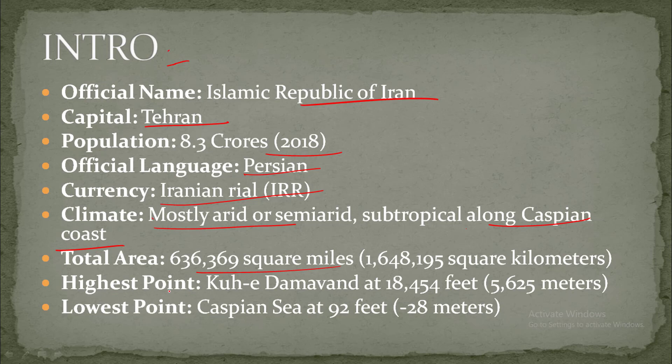The highest point is Kuh-e Damavand at 18,454 feet. The lowest point is the Caspian Sea at 92 feet below sea level.